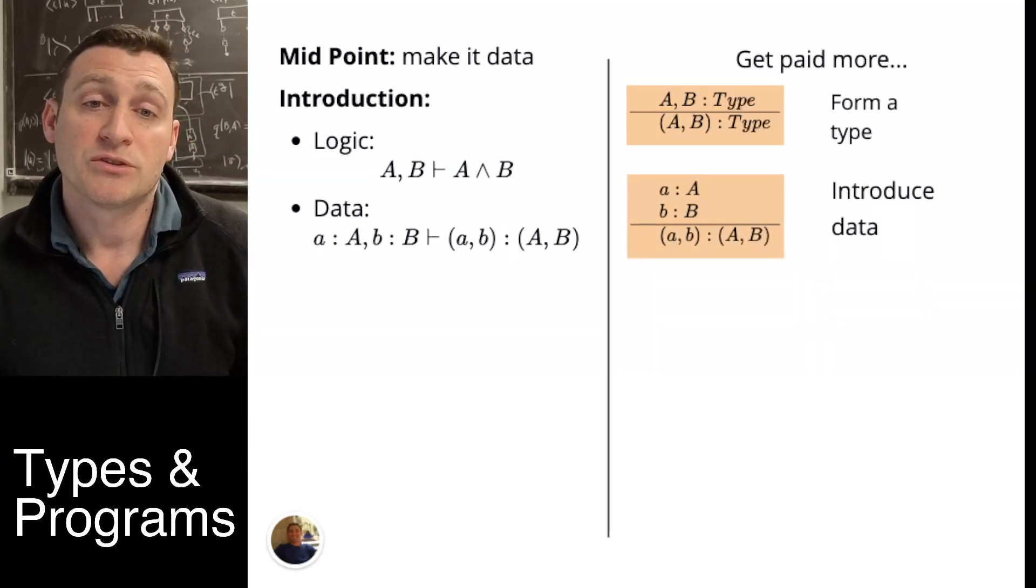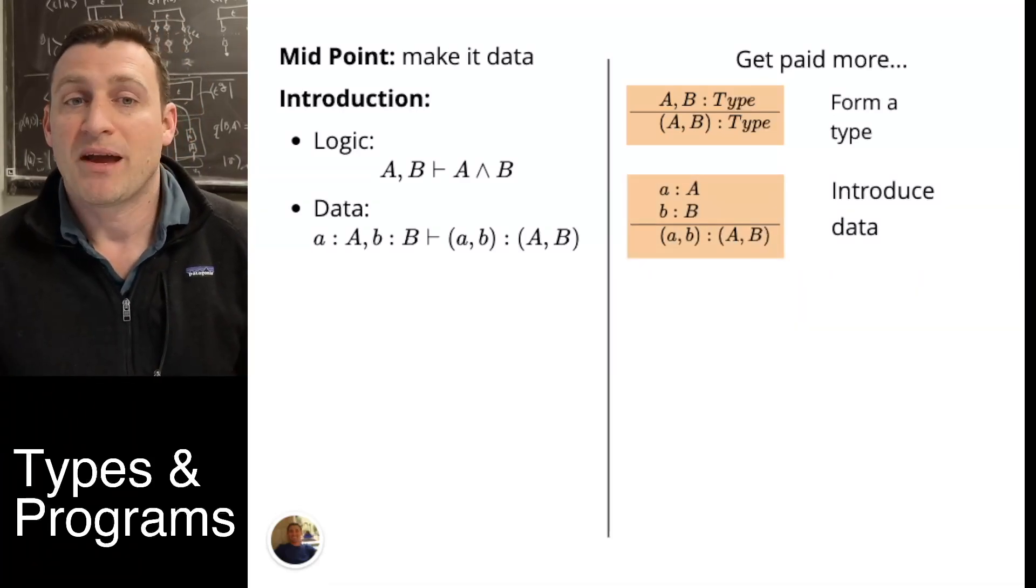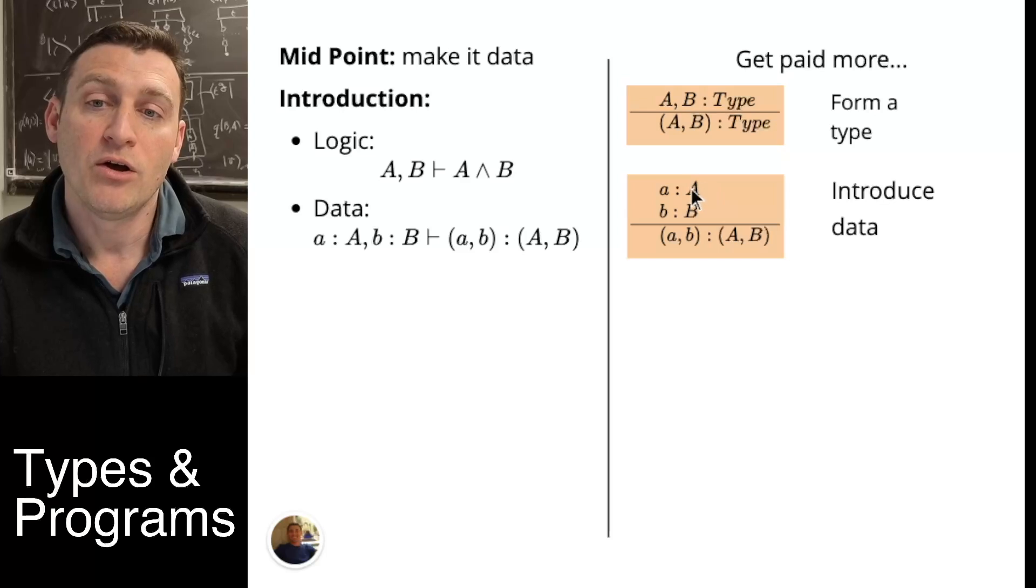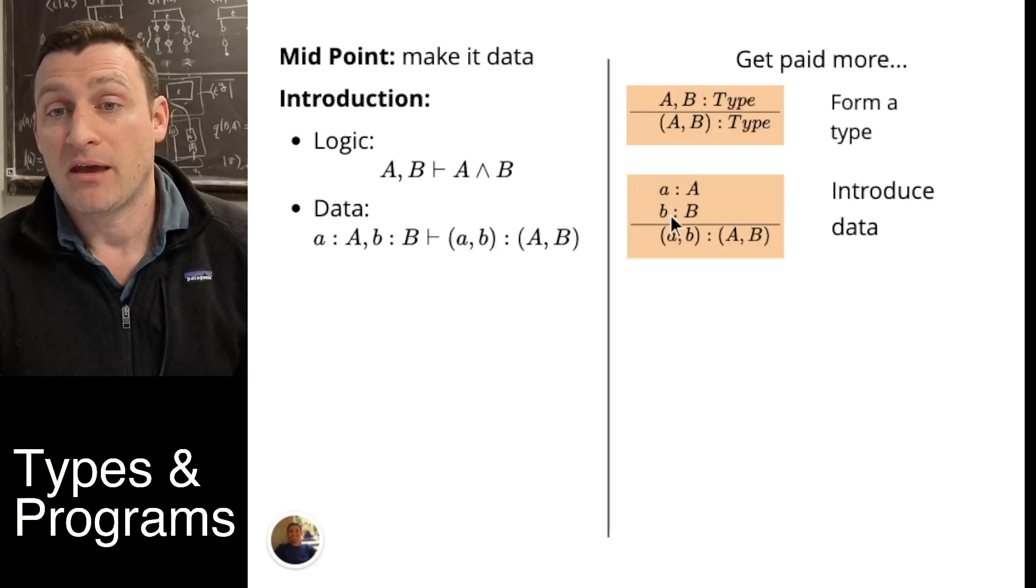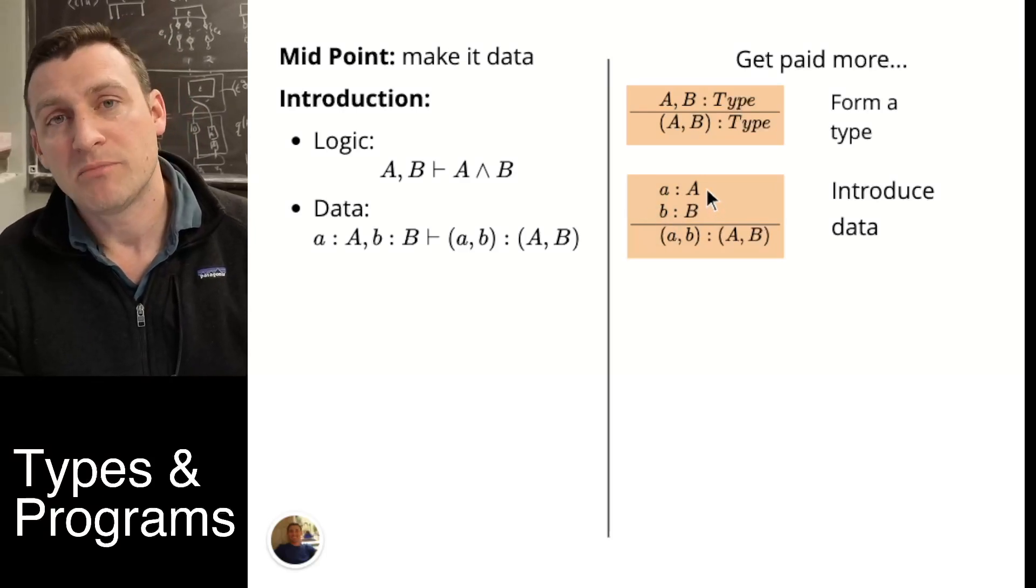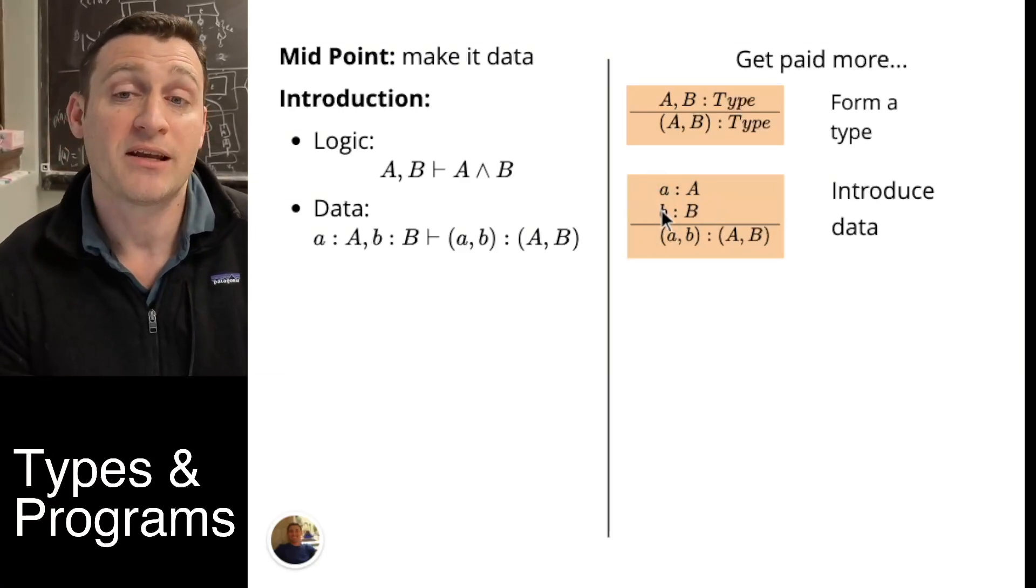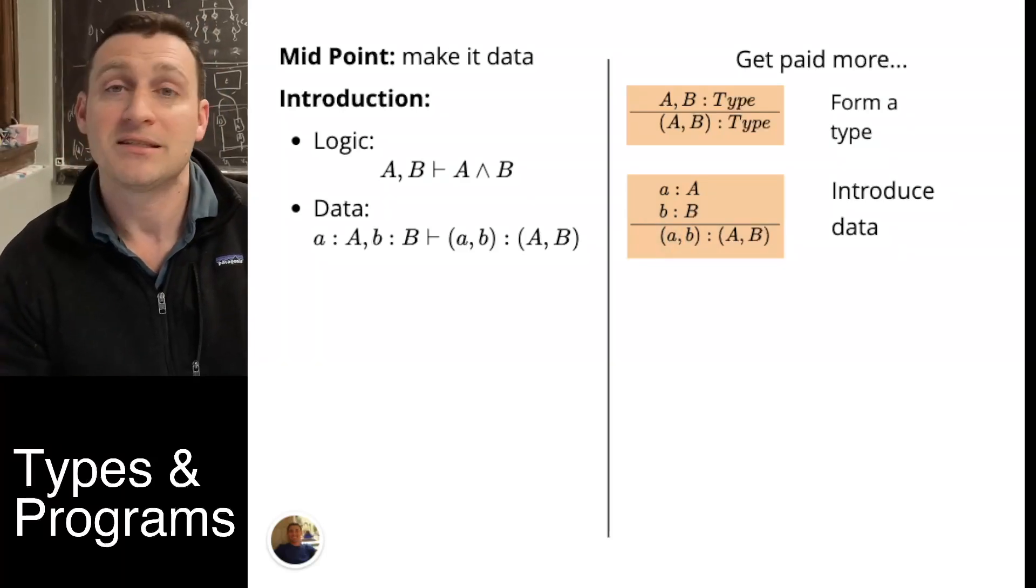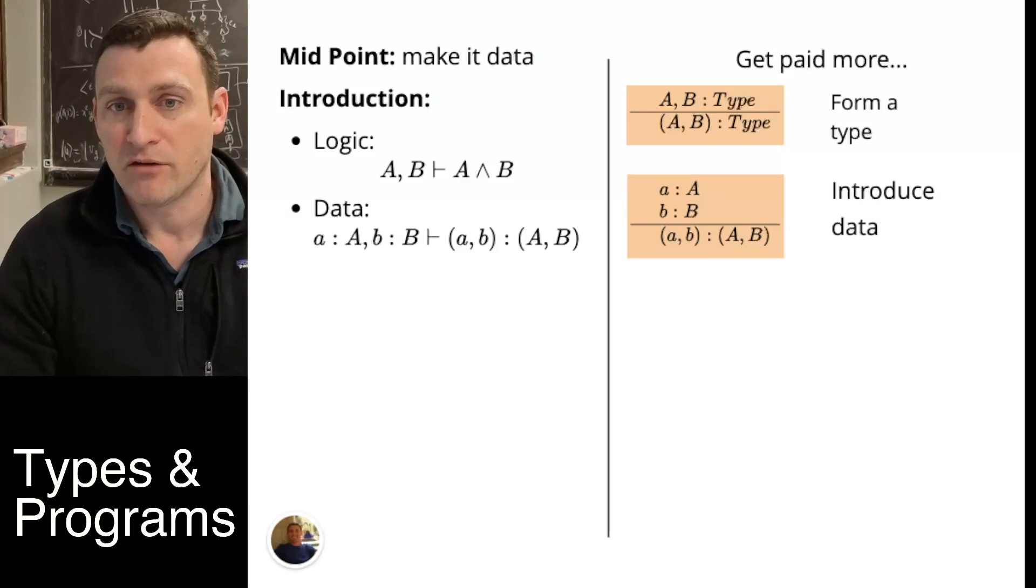Now we go back to our introduction rules. In logic, we had to introduce by entailment. Here we simply do the same thing. We use our sequent calculus but we now add the data in as well. No longer is just A and B giving us A and B. We have data of type A and data of type B. So what this means is we have a specific string and a specific integer giving us a string integer pair. That's the type of introduction that we need for this data.